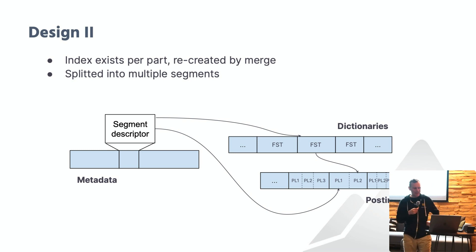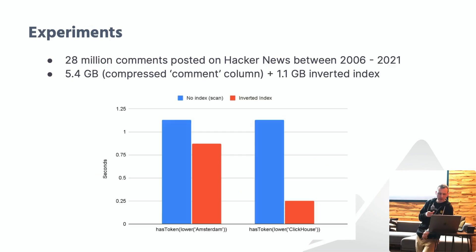As you can also see on the slide, the inverted index writes three files to disk. There's a metadata file on the left side, which knows about all the segments. There's a dictionary file which contains all the segment dictionaries in the form of minimized finite state transducers. And then there's a posting list file which contains all the segment posting lists in the form of roaring bitmaps.